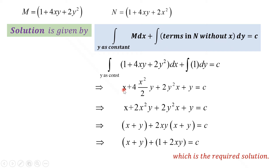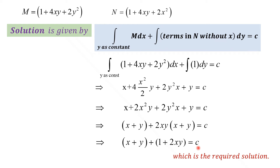After integration, we get x + 4x²y/2 + 2y²x + y = c. The 2 cancels with 4, leaving 2. Thus, x + 2x²y + 2y²x + y = c. Taking x and y in brackets and factoring out 2xy from the middle two terms, we get (x + y) + 2xy(x + y) = c. Taking (x + y) common outside, the result is (x + y)(1 + 2xy) = c. This is the required solution.